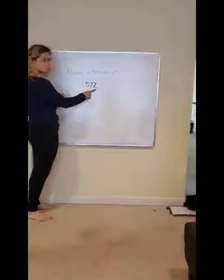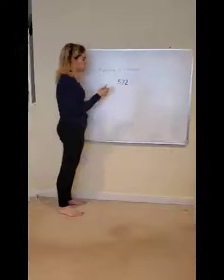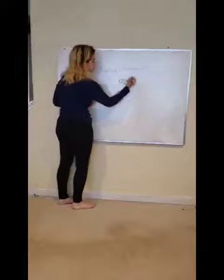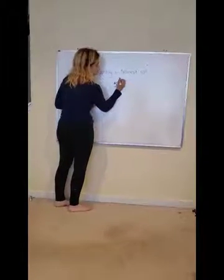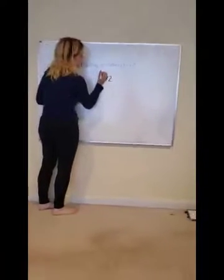So we have our number 572. We're going to find, first we're going to label. So we're going to say ones, tens, hundreds.